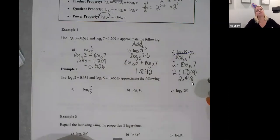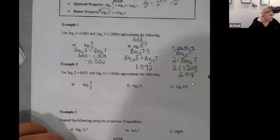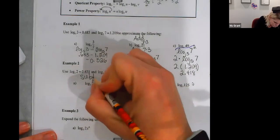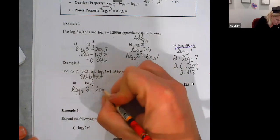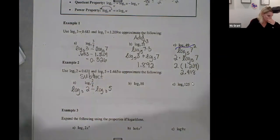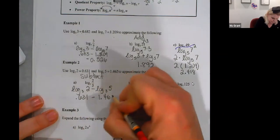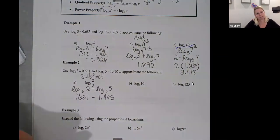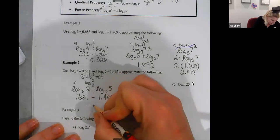Example two. Log base three of two is 0.631 and log base three of five is 1.465. So here we go. A, it's a fraction, so I'm going to subtract. Log base three of two minus log base three of five. 0.631 minus 1.465. So negative 0.834.